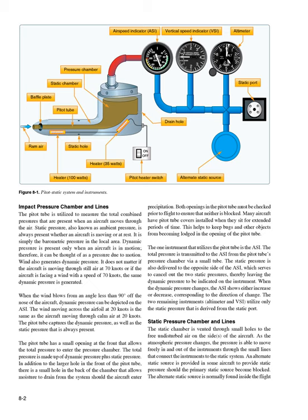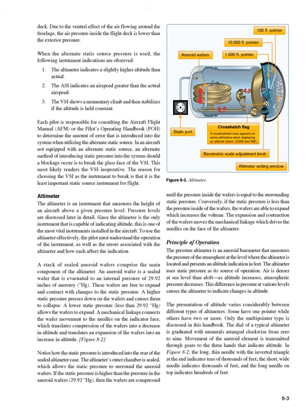The two remaining instruments — altimeter and VSI — utilize only the static pressure derived from the static port. The static chamber is vented through small holes to the free, undisturbed air on the sides of the aircraft. As the atmospheric pressure changes, the pressure is able to move freely in and out of the instruments through the small lines connecting the instruments to the static system. An alternate static source is provided in some aircraft to provide static pressure should the primary static source become blocked. The alternate static source is normally found inside the flight deck.